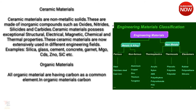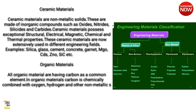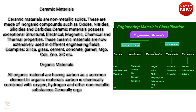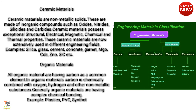Organic Materials — all organic materials have carbon as a common element. In organic materials, carbon is chemically combined with oxygen, hydrogen, and other non-metallic substances. Generally, organic materials have complex chemical bonding. Examples: plastics, PVC, synthetic rubbers, etc.